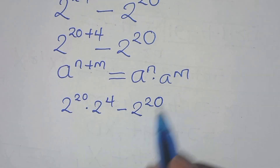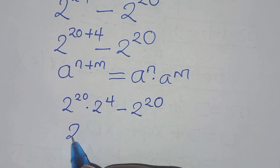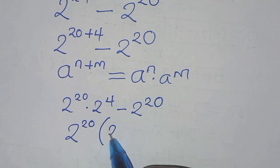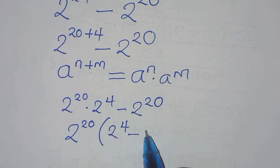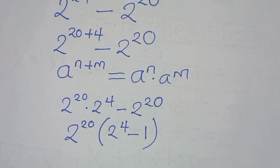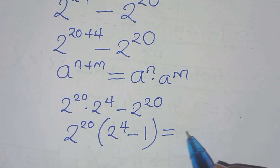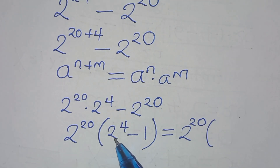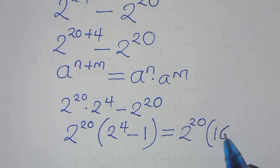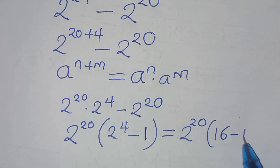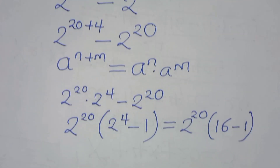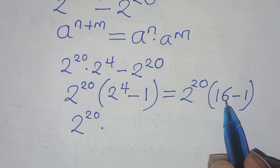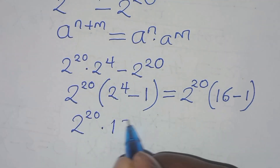Now, 2 to the power 20 is common, so we can factor out 2 to the power 20 into the parentheses: 2 to the power 4, minus 1. So we have 2 to the power 20 times the quantity (2 to the power 4 minus 1). Since 2 to the power 4 is 16, we have 16 minus 1, which equals 15.